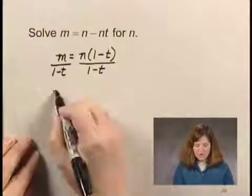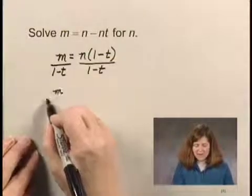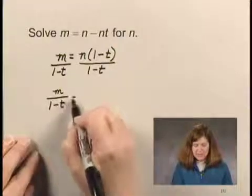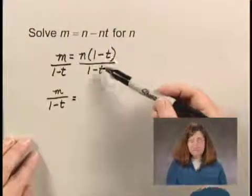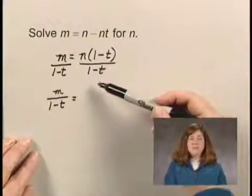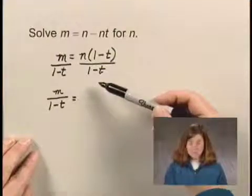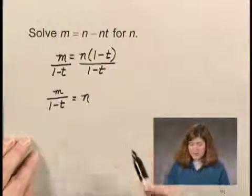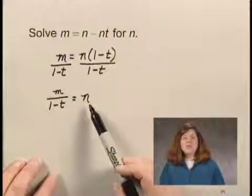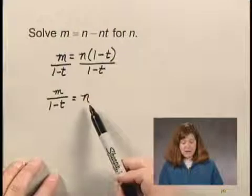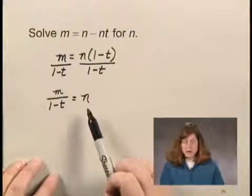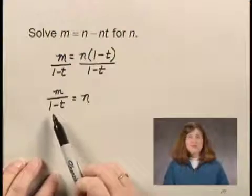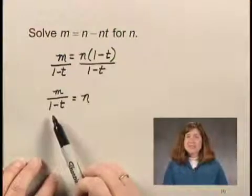On the left side, I have m over 1 minus t. And on the right side, 1 minus t over 1 minus t is 1, so I'm just left with n. And I have solved for the letter n because it is by itself on one side of the equation and the other side of the equation does not contain n at all.